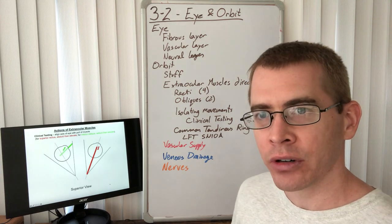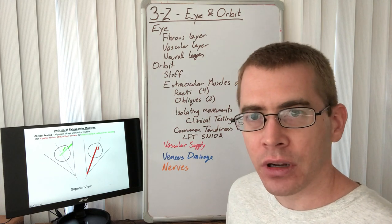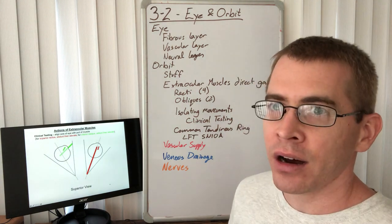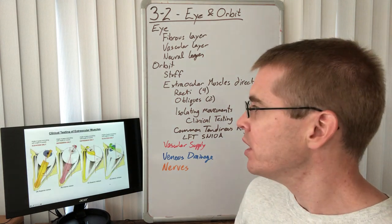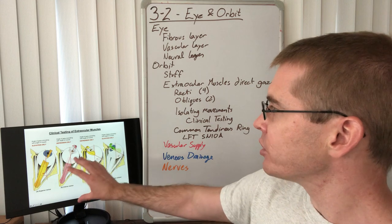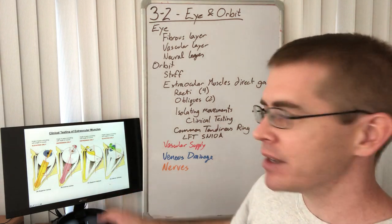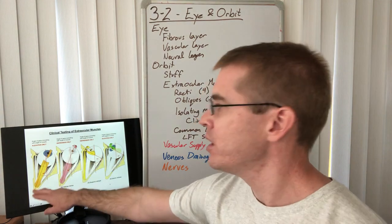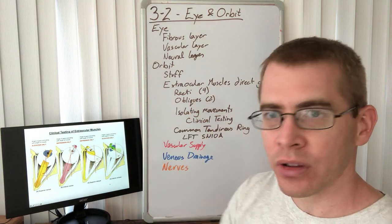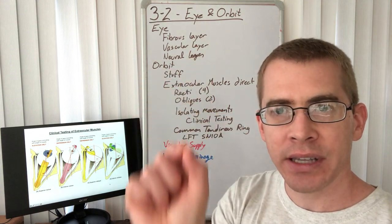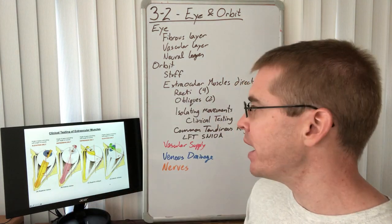The H pattern tests cranial nerves and ensures there are no deficits, since problems can cause double vision and indicate intracranial issues. The angle of the orbit is about 23 degrees off midline, which is why testing slightly off center aligns the axis of the muscle. The superior and inferior obliques are tested at about 51 degrees, fully adducting the eye to align with the muscle vector.